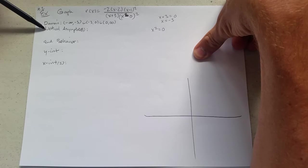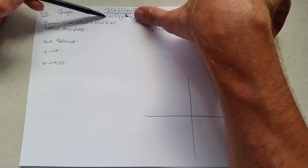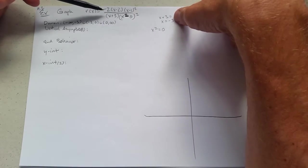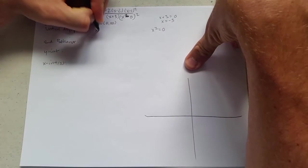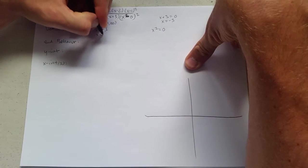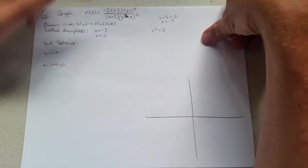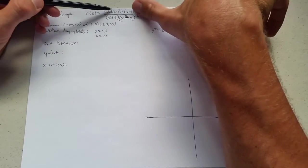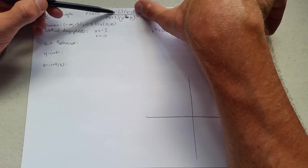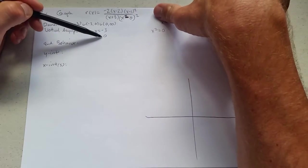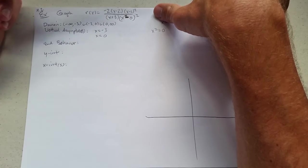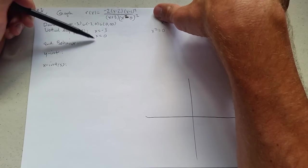Now for vertical asymptotes. Vertical asymptotes happen when your denominator equals 0. Now these are the x values we just took out of the domain. I want to be a little bit careful. Does negative 3 make the numerator 0? If I plug in negative 3, I do not get 0. If I plug in 0, I also do not get 0. So these are vertical asymptotes.